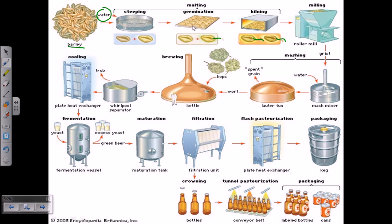After the germination is done, when they no longer require moisture, we need to take out the moisture. For taking out that moisture, we need to dry them. That part is called the kilning or kiln drying process. Once the moisture content is utilized, we need to kiln dry those malts.